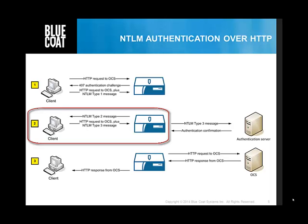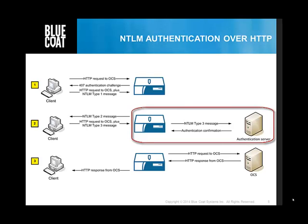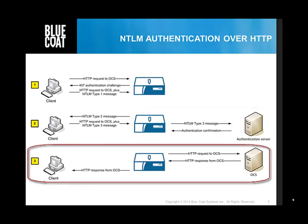The client sends the type 3 message to the proxy SG as a base 64 encoded string. The proxy SG uses the Windows net logon service to pass the information to the domain controller for the final validation. If the type 3 message contains the correct response to the challenge, the domain controller authenticates the user. At this point, the proxy SG passes the original request to the origin content server, and the user starts receiving the requested data.